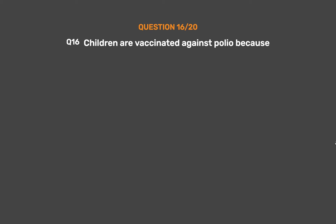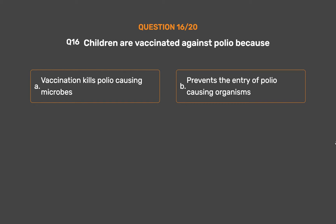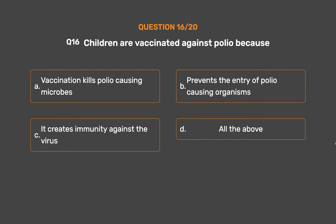Question number 16. Children are vaccinated against polio because: Option A: Vaccination kills polio-causing microbes. Option B: Prevents the entry of polio-causing organisms. Option C: It creates immunity against the virus. Option D: All the above.